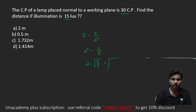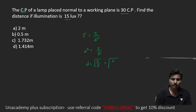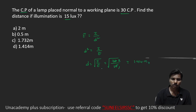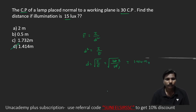Intensity (candle power) I = 30, illumination E = 15. So d = √(30/15) = √2 = 1.414 meters. The answer is option D: 1.414 meters.